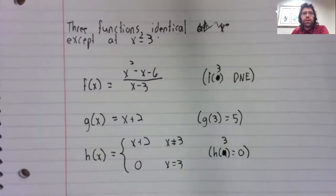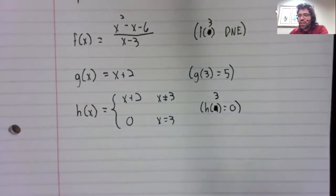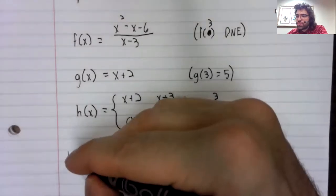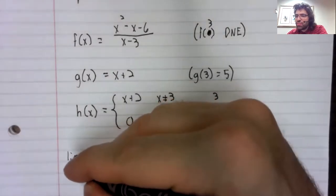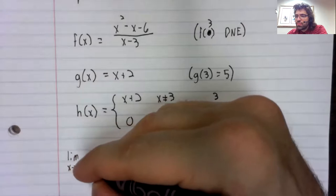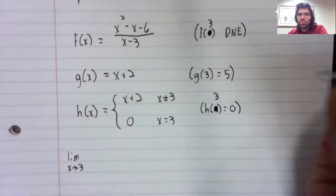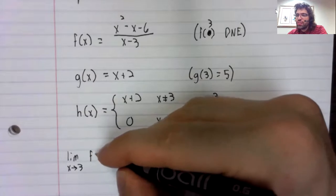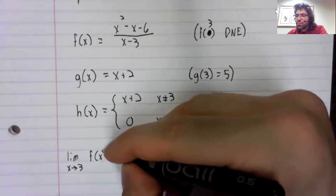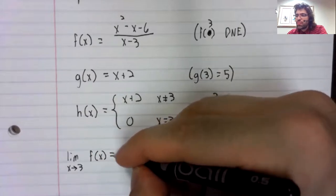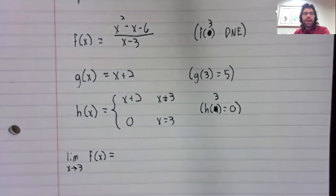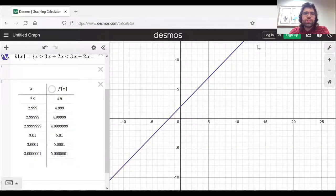And now let's investigate the limit as x approaches three of f of x. And we'll investigate this using a table, just as we did in our first example.